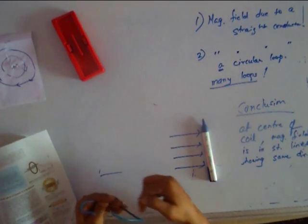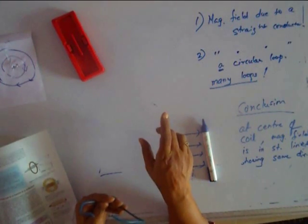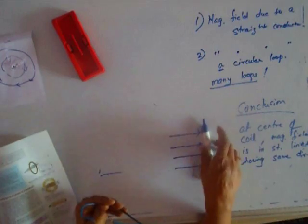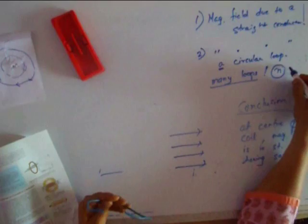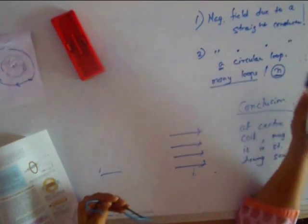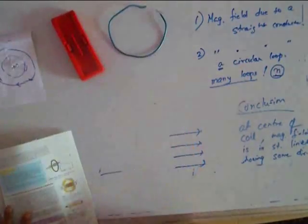The magnetic field produced by each of them will be in the same direction and therefore, the magnetic field will be now multiplied by the number of turns. If number of turns is n, then the magnetic field will be multiplied by the number of turns and you will have a large magnetic field at the centre.